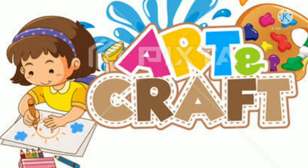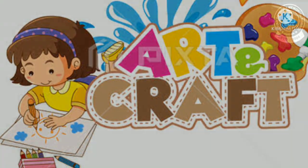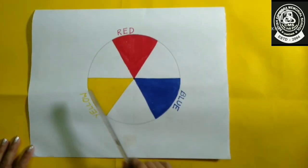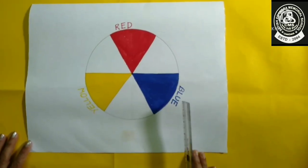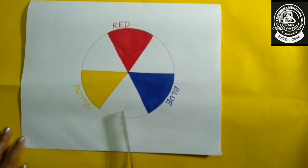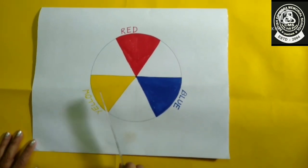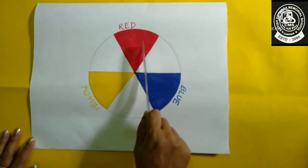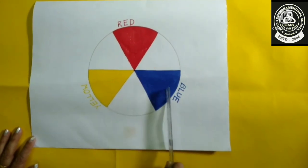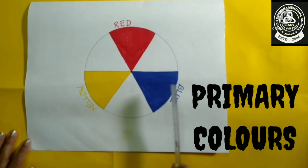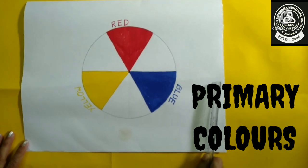Hello my dear children, welcome back to your art and craft class. Look at this circle. What can you see here? You can see three colors: yellow, red, and blue. So these are the three primary colors.